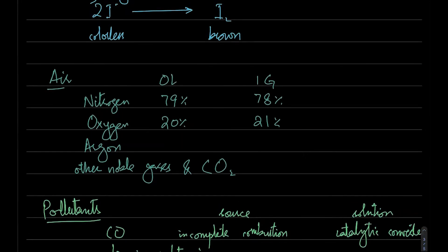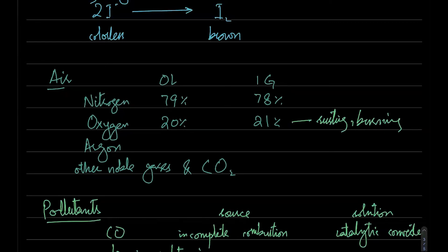You can test that oxygen makes up about 20% of air by burning a candle or rusting iron — both will use approximately 20% of the surrounding air. Oxygen and nitrogen are both obtained by fractional distillation of air. Oxygen is used in hospitals and for rocket fuel; nitrogen is used to make fertilizers.